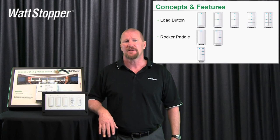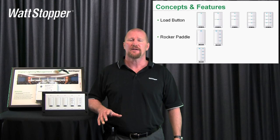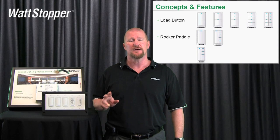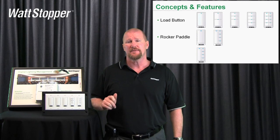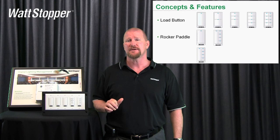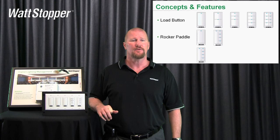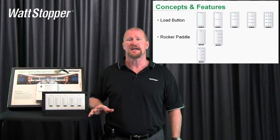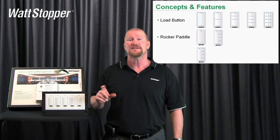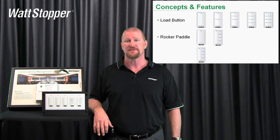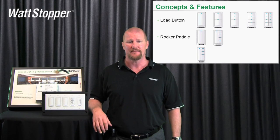The second button type is the rocker paddle, which is basically a dimmer. It comes only on two devices shown on the screen: an LM-DM-101 dimmer and an LMS-W-105 scene switch. The rocker paddle on the scene switch and the rocker on the dimmer are virtually identical from a DLM standpoint electronically. They raise and lower any loads they're bound to — they'll turn them on and off and ramp them up and down.